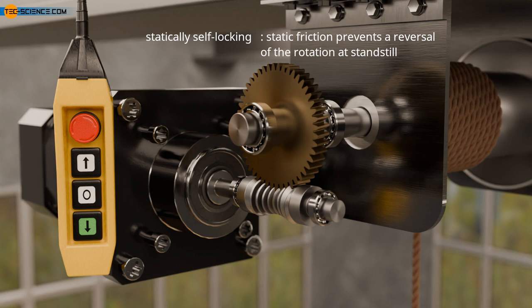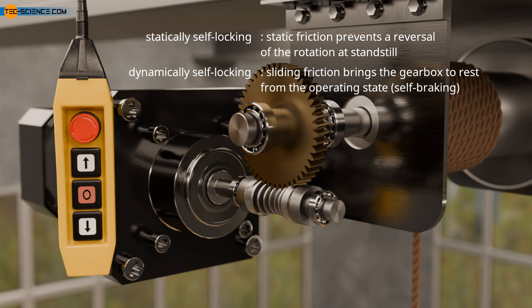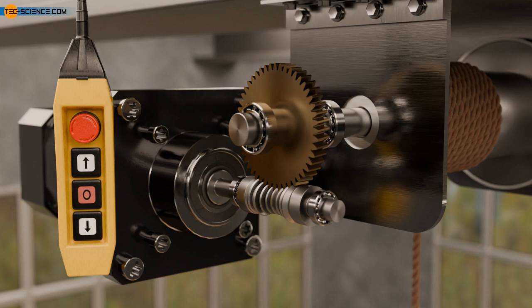On the other hand, there is self-locking out of the operating state, which is also referred to as dynamically self-locking. In this case, the sliding friction must slow down the gearbox after the motor has been switched off so that it automatically comes to a standstill.